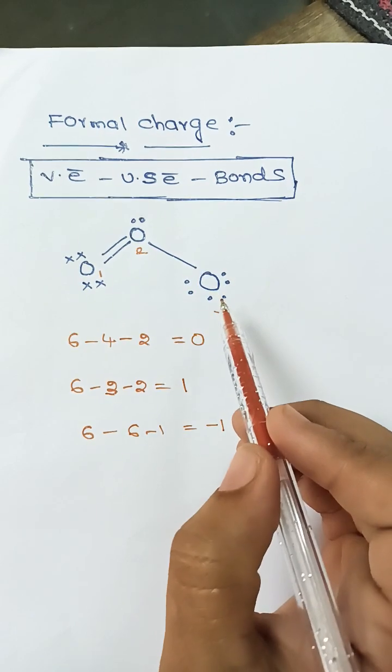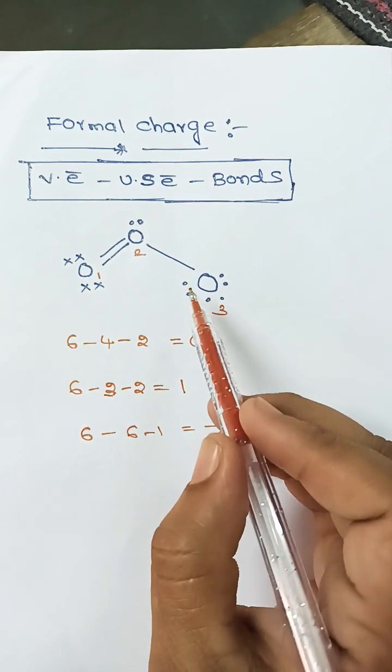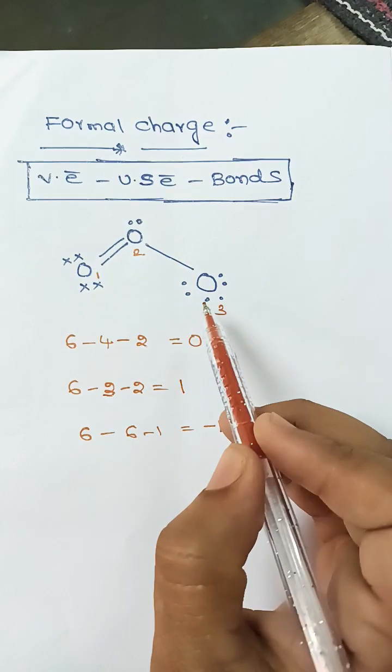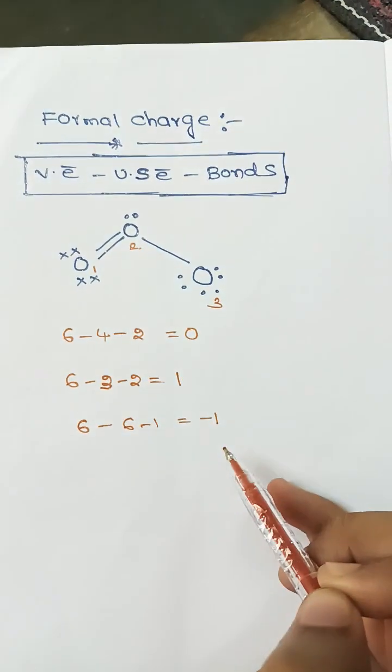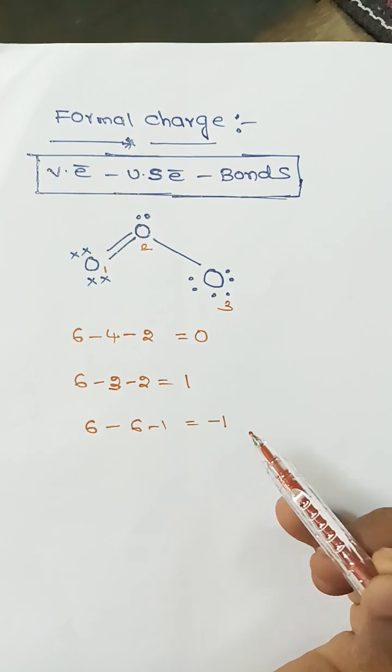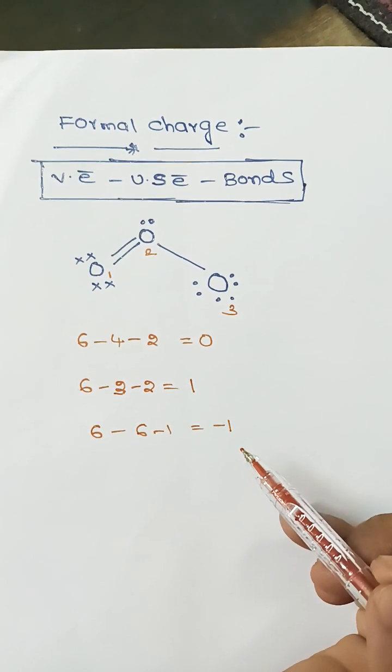Here, for the third oxygen atom, the valency electrons are 6, unshared electrons are 6, and the number of bonds is 1. So the result is 6 minus 6 minus 1 equals minus 1. So this is a simple way to calculate the formal charge.